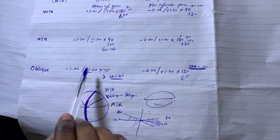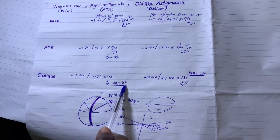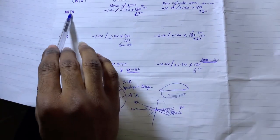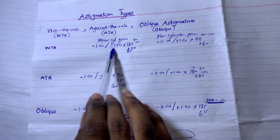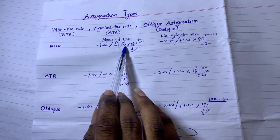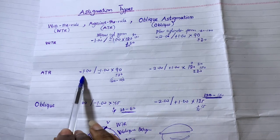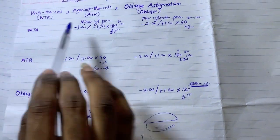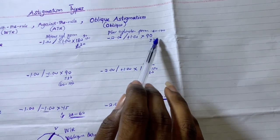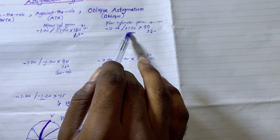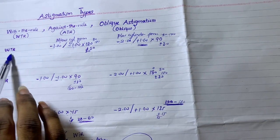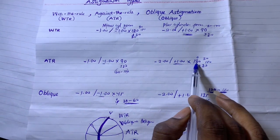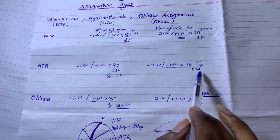So for oblique astigmatism: minus cylinder has axis between 30 and 60, and plus cylinder has axis between 120 and 150. Now a final recap — for with-the-rule: minus cylinder axis 180 plus or minus 30 (0–30 or 150–180); plus cylinder axis 90 plus or minus 30 (60–120). For against-the-rule: minus cylinder axis 90 plus or minus 30 (60–120); plus cylinder axis 180 plus or minus 30 (0–30 or 150–180).